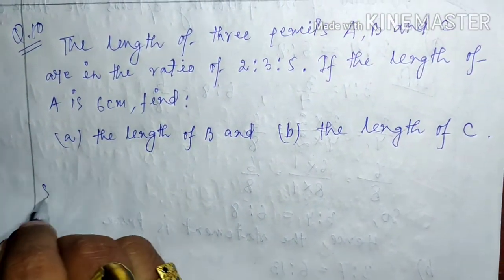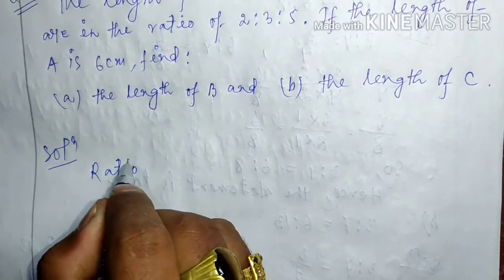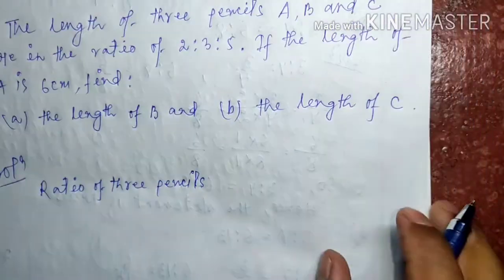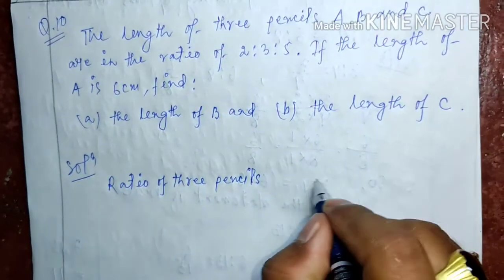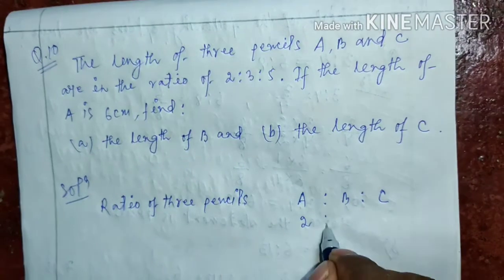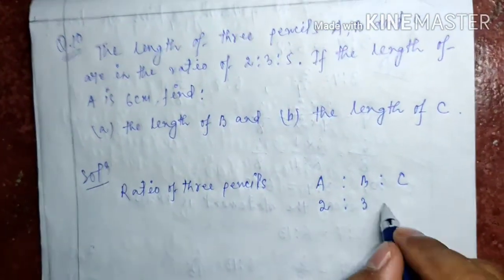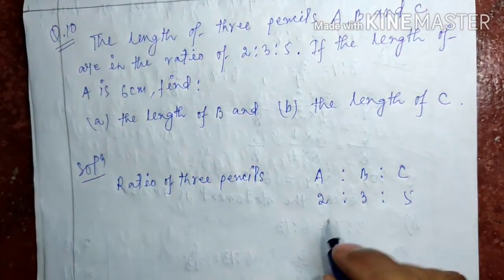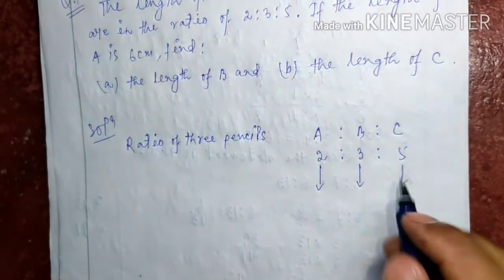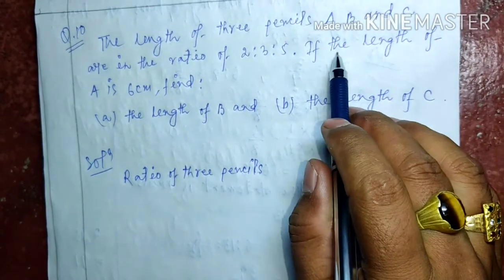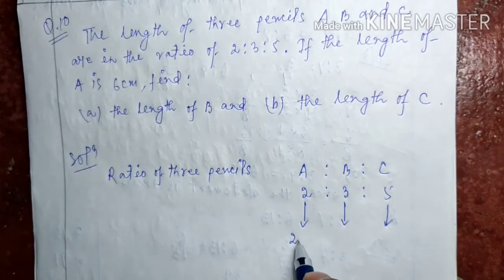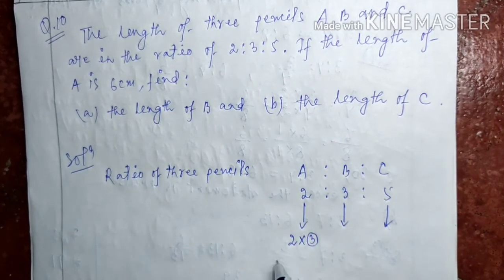Solution. Ratio of three pencils, A is to B is to C, is given as 2 is to 3 is to 5. The length of A is 6 cm. This one is 6 cm. We have to make 2 become 6, so we multiply with 3. Then bring down this 3.